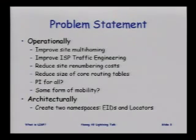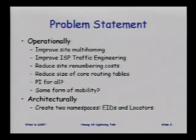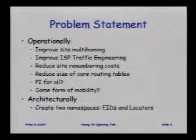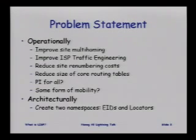We also want to reduce site renumbering costs, and we want to reduce the size of the core routing tables — try to make it more efficient so there's a better cost-benefit ratio in buying routers and deploying them. So if we do these sorts of things, could we have provider-independent addresses for everybody, and can we make it scale?